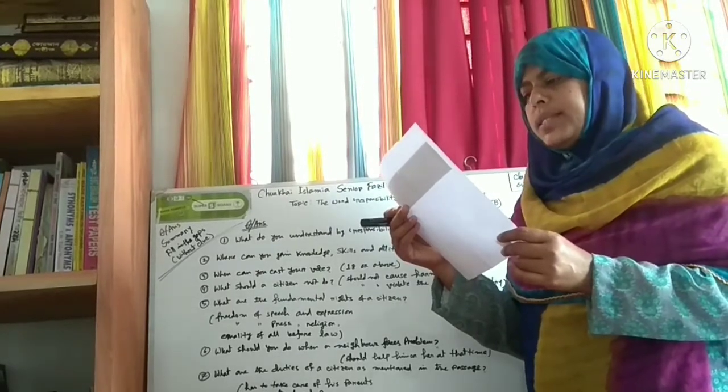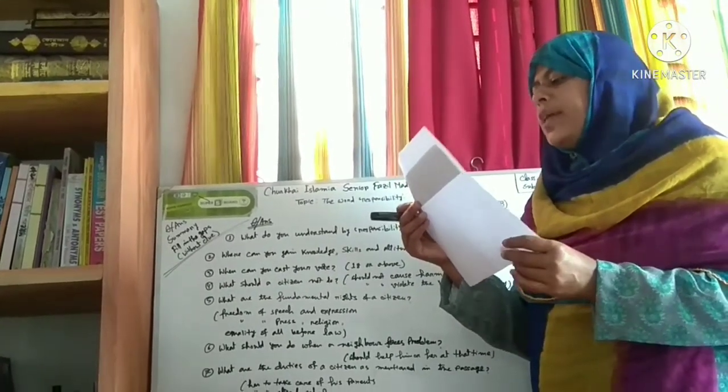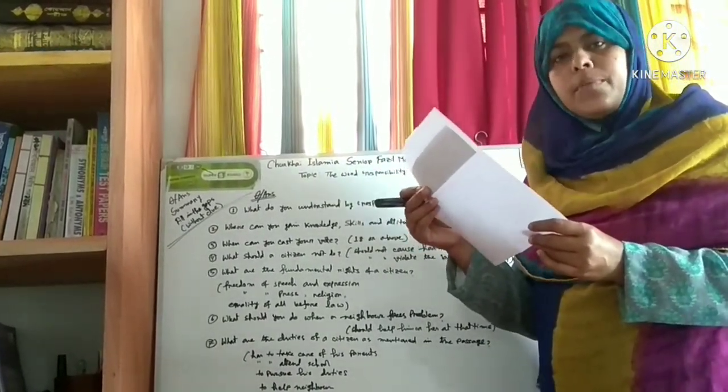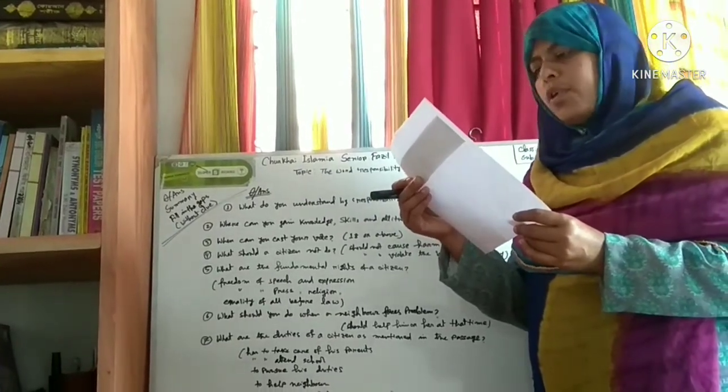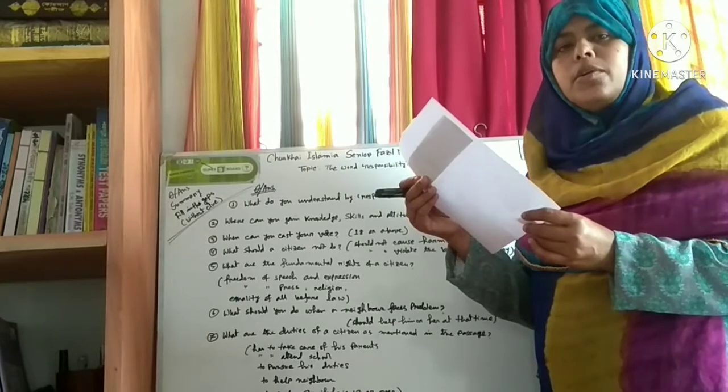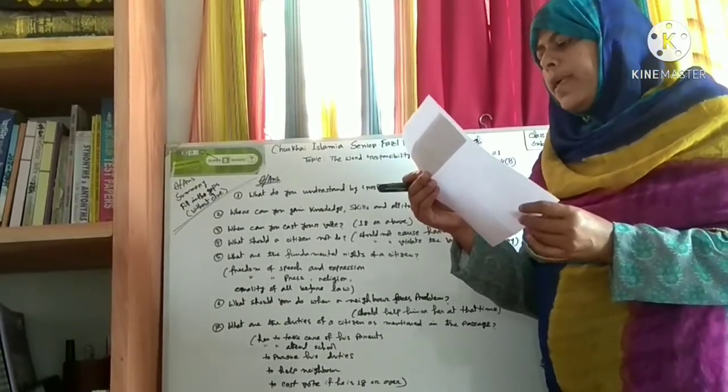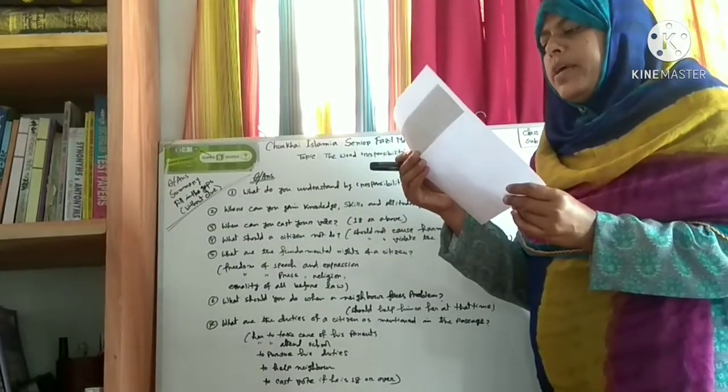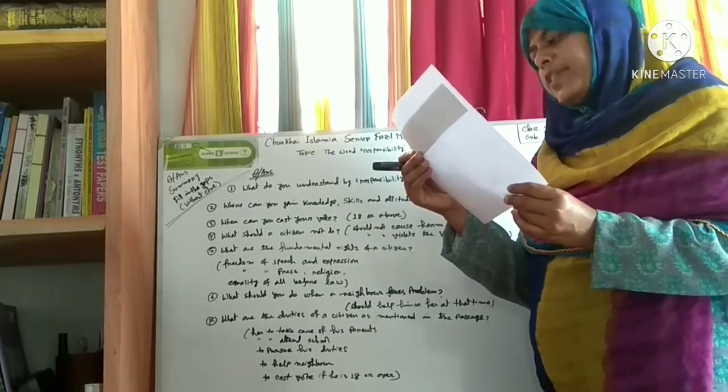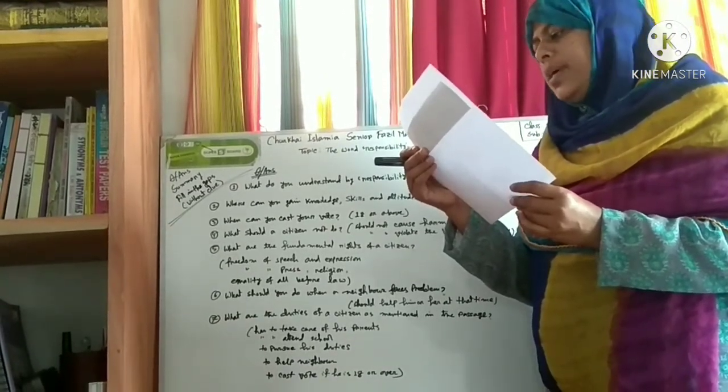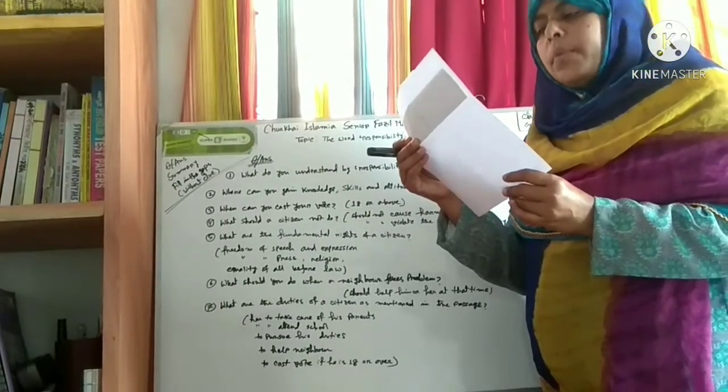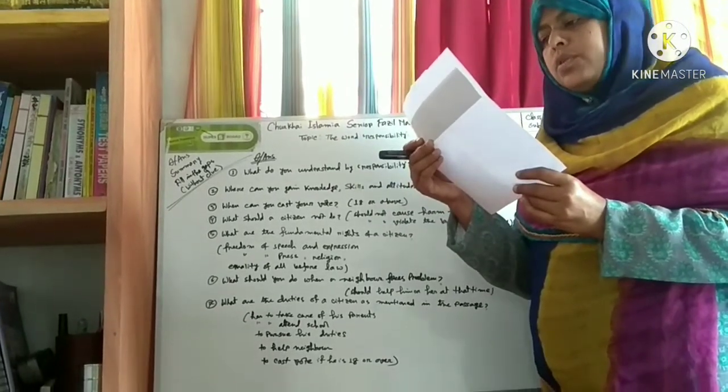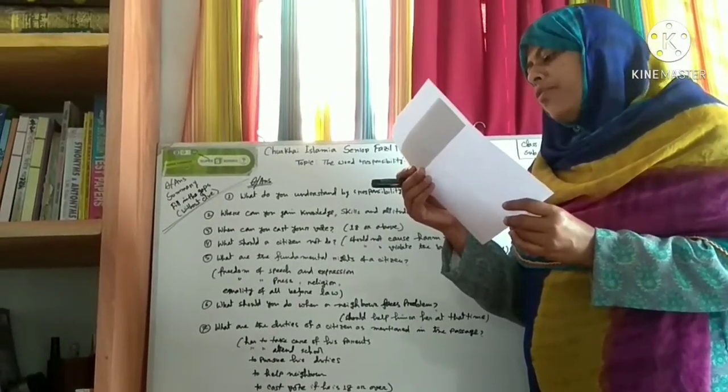It has the responsibilities to provide citizens the basic necessities of life, which are fundamental needs. Basic necessities include food, clothing, shelter, education, and healthcare. The government has also to safeguard the fundamental rights of the citizens including the right to the freedom of speech and expression, the right to the freedom of the press, the right to the freedom of religion.